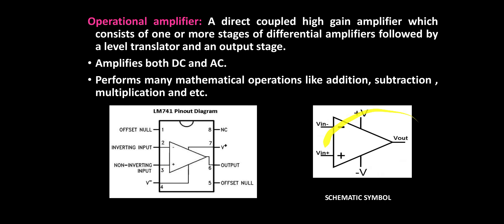Now let's see the schematic symbol of the operational amplifier. Like the differential amplifier, it has two inputs: one is the positive input, which is the non-inverting input, and the second one is the negative input. It also has two supply sources: plus V and minus V, which are used to supply power to the operational amplifier. The output is taken at the sixth terminal.